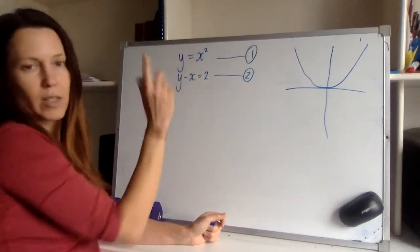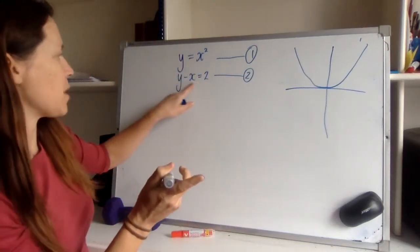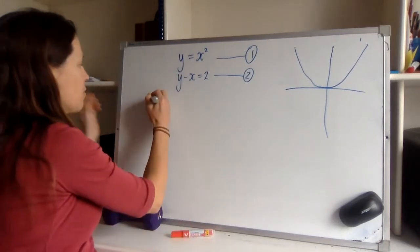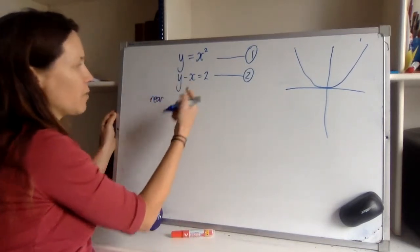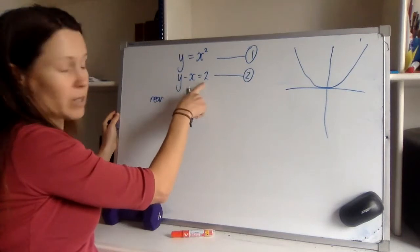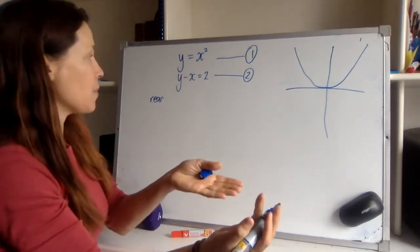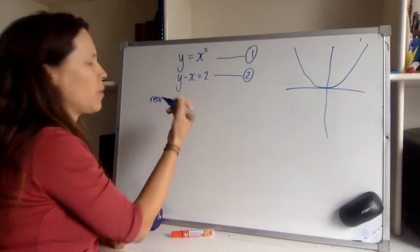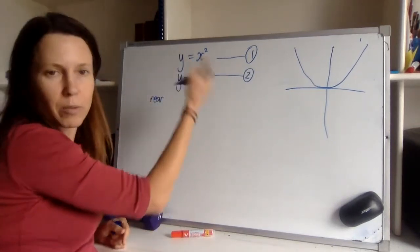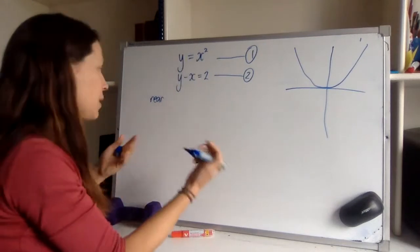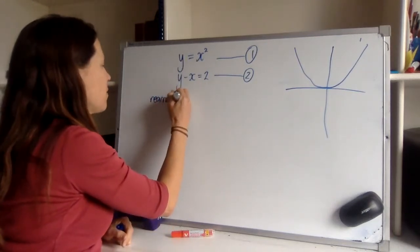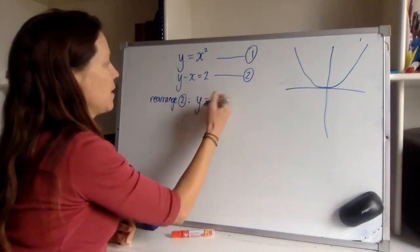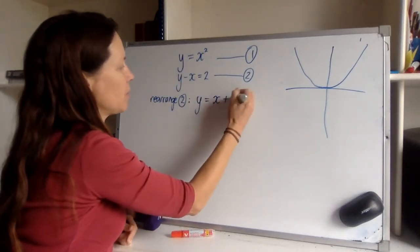So for me, the y equals x squared is easy. This one would be much easier to graph if it was in the form y equals mx plus b. So I'm thinking that's my first step anyway, because if I can rearrange this one so it's in terms of y equals something, then I can just let both of the somethings equal each other. And by that I mean if y equals this and y equals that, then this and that must equal each other. So let's rearrange equation two and let's add x to both sides.